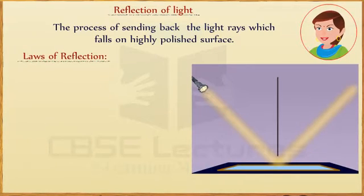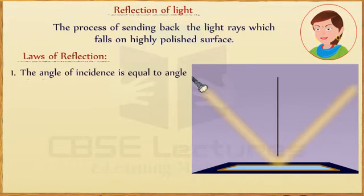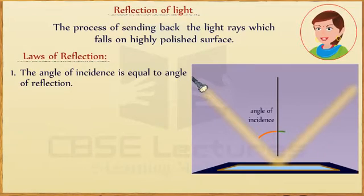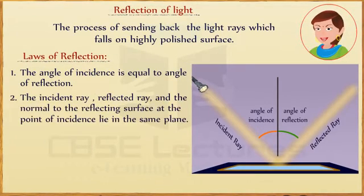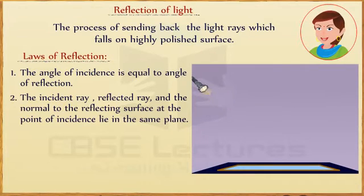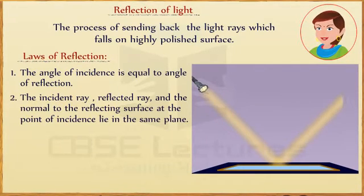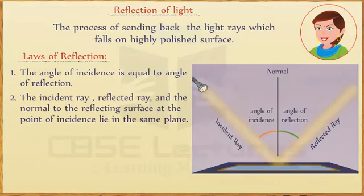Laws of reflection. First, the angle of incidence is equal to the angle of reflection. Second, the incident ray, the reflected ray, and the normal to the reflecting surface at the point of incidence lie in the same plane.